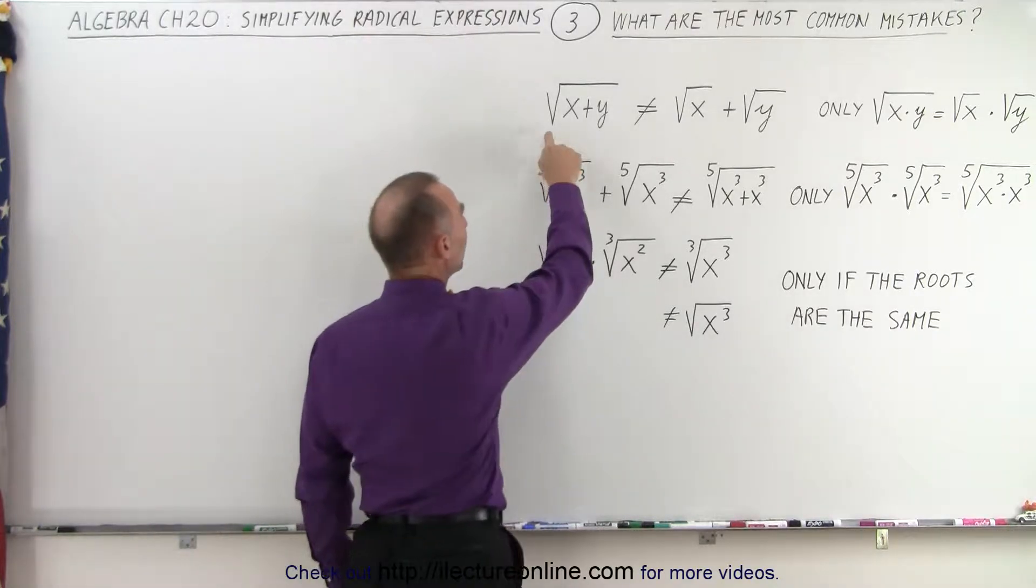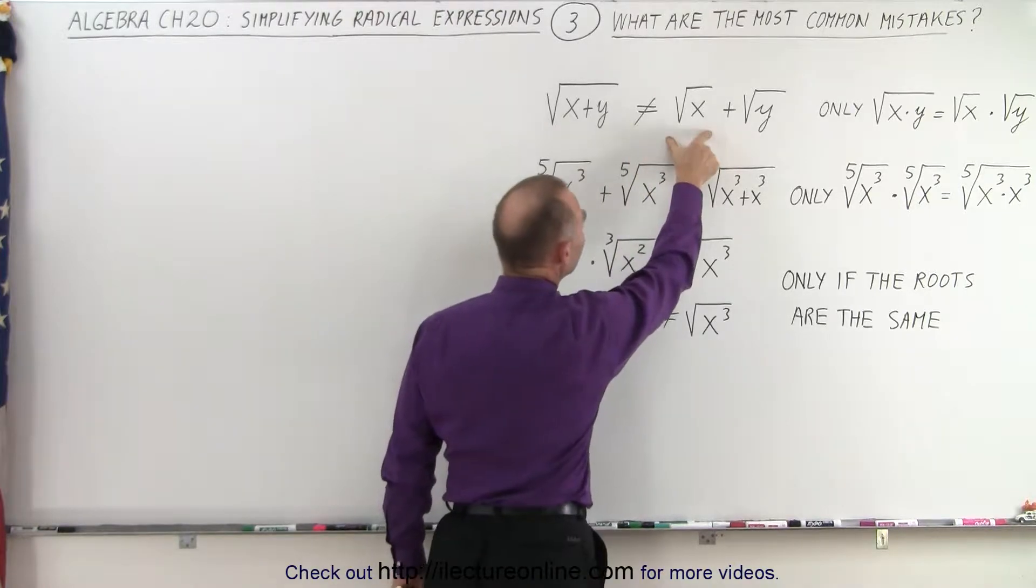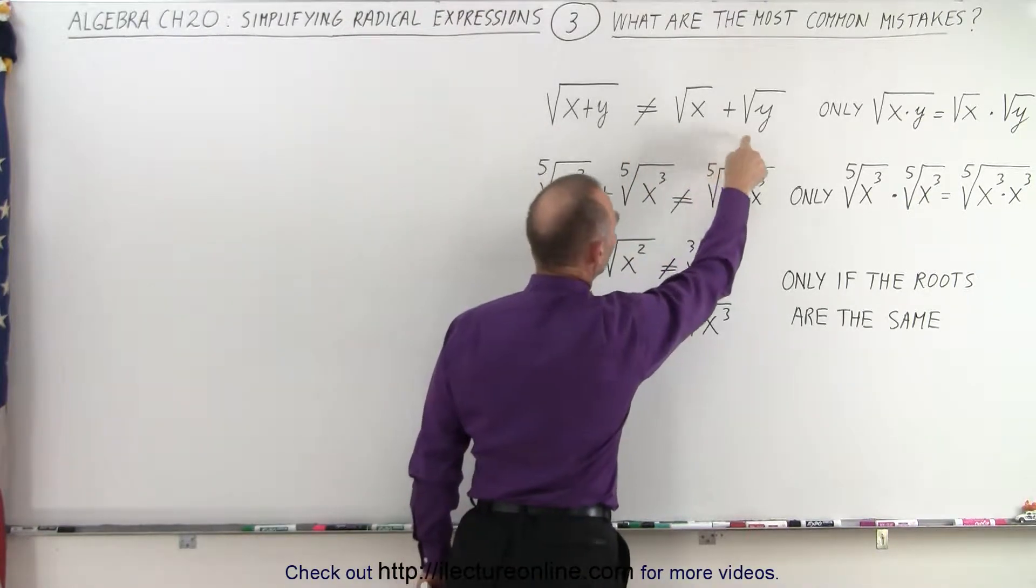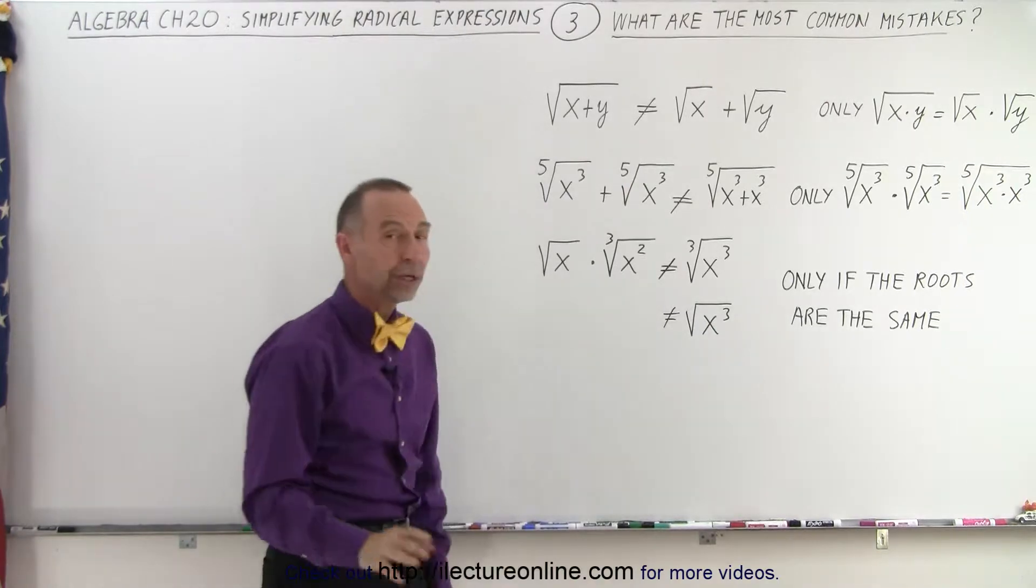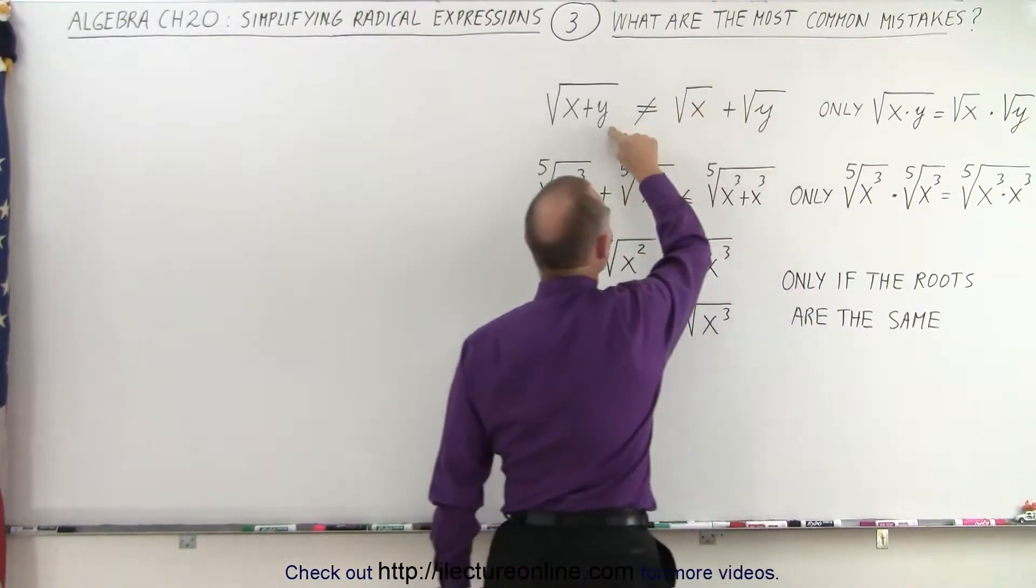When we have the square root of x plus y, we cannot write them separately as the square root of x plus the square root of y. Those are not the same thing. We can only do so if they're multiplied together, not if they're added together.